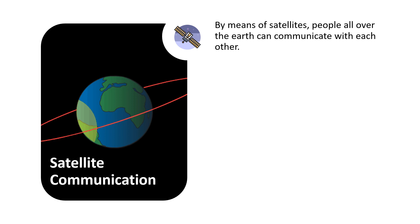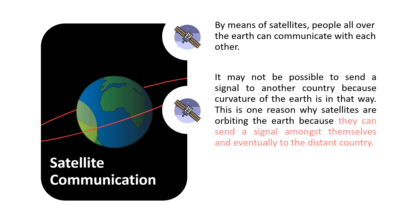The first one is satellite communication. By means of satellites, people all over the earth can communicate with each other. We know that it may not be possible to send a signal to another country because of the curvature of the earth. This is the reason why satellites are orbiting the earth — because they can send a signal amongst themselves and eventually to a distant country.